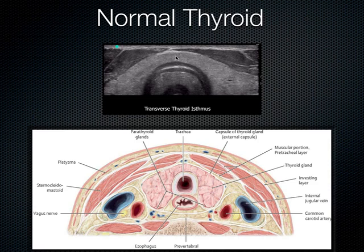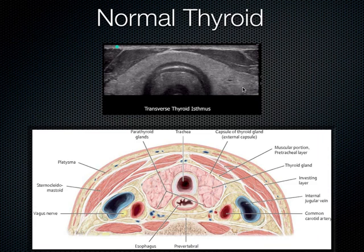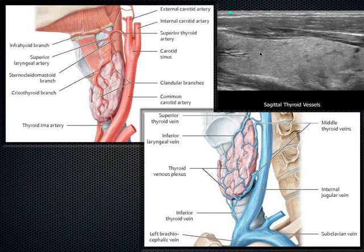Moving to the thyroid: in the transverse plane, the thyroid has a right lobe, isthmus, and left lobe, positioned medial to the carotid arteries. The thyroid should have a nice isoechoic (somewhat hyperechoic) texture — it looks almost identical to testicular tissue in its glandular appearance. In the sagittal view, vasculature is visible coursing through the parenchyma with its characteristic isoechoic texture.